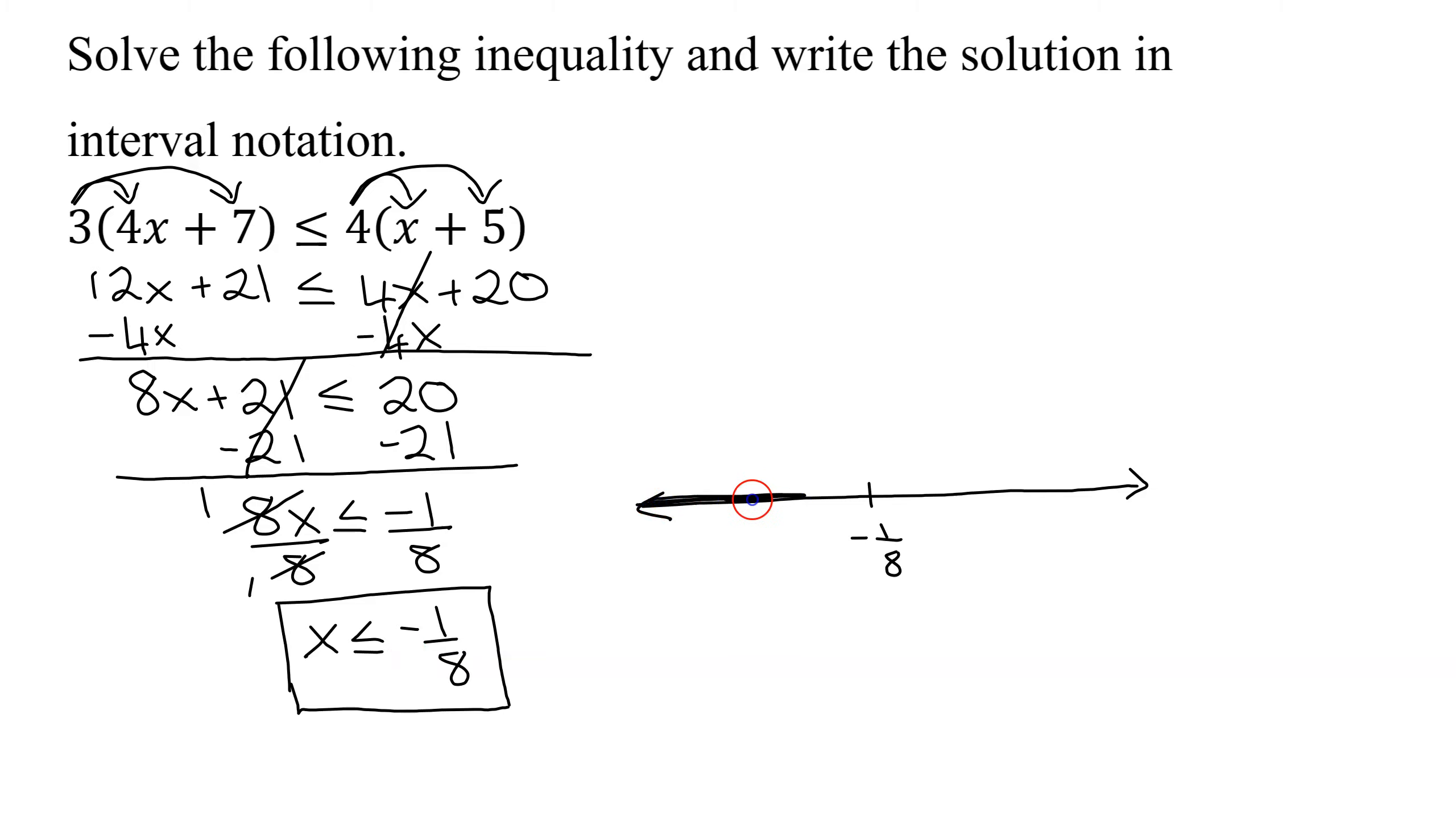All the numbers less than negative 1/8 are on the left. So, you shade those in and put an arrow pointing all the way to negative infinity. And since it has an equals on the less than, it includes the end point. So, you use a square bracket on the negative 1/8.